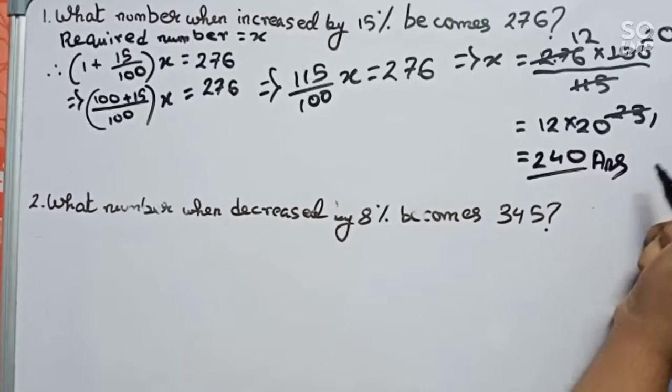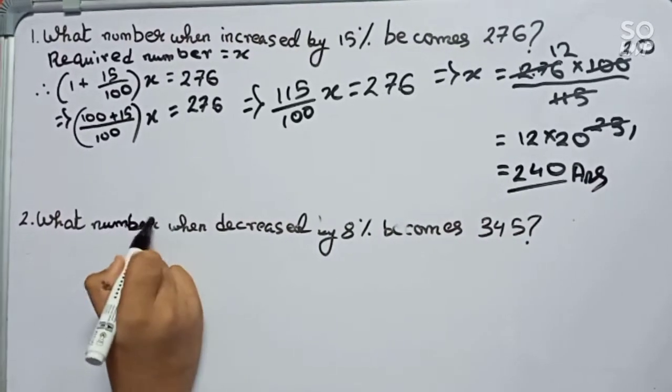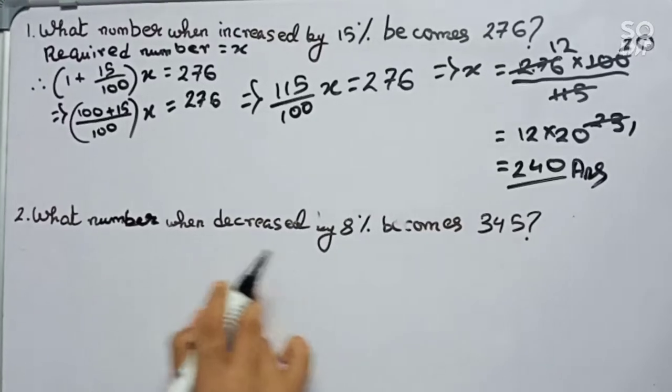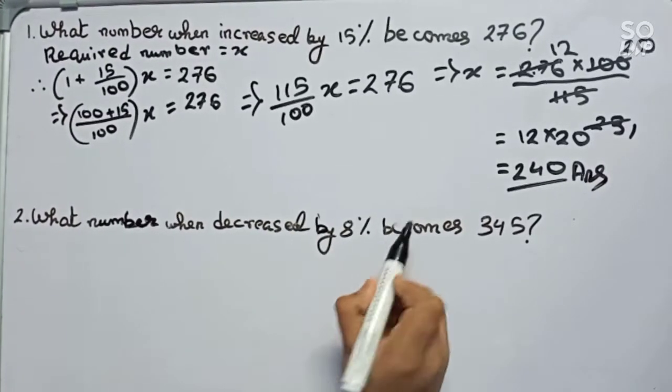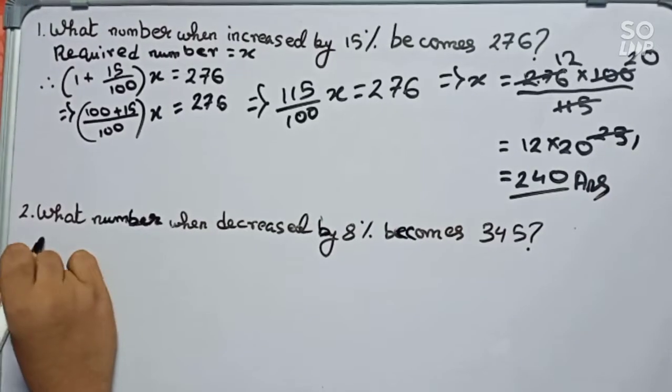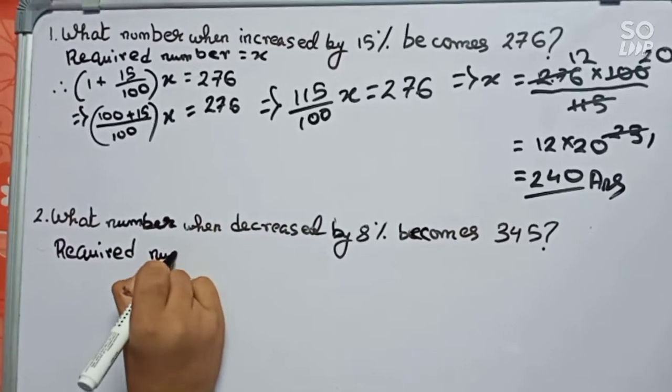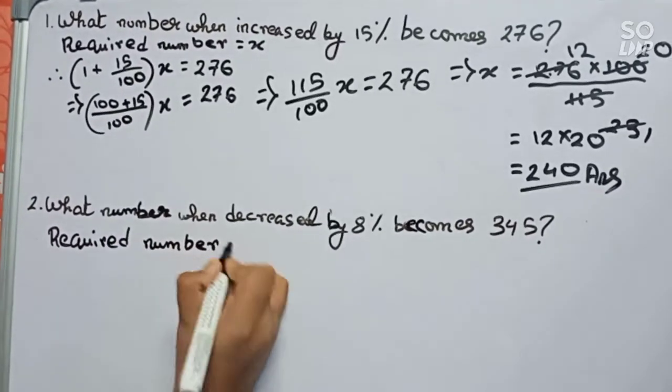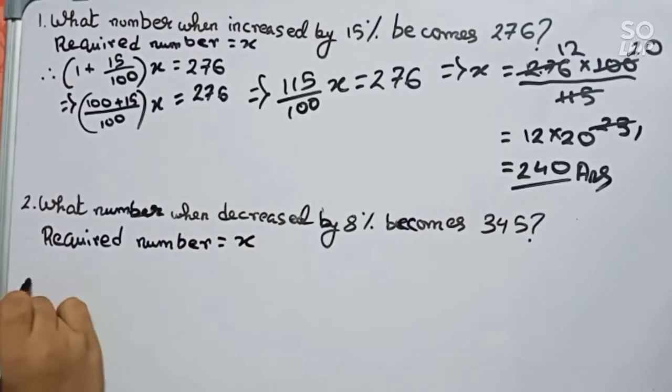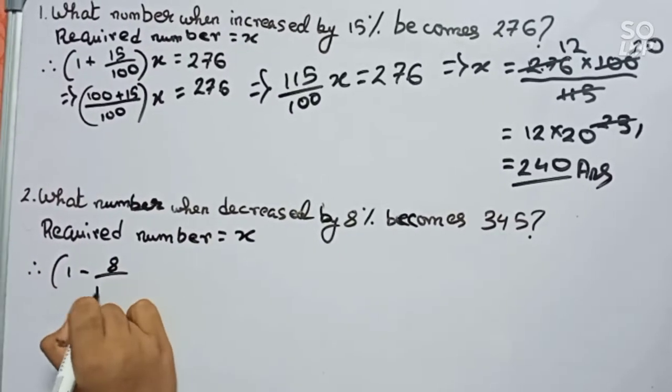I am going to solve the second number. Our question is what number when decreased by 8% becomes 345? So start, required number equals to x. Therefore (1 - 8/100) and we are taking minus because it is decreased, times x equals to 345.